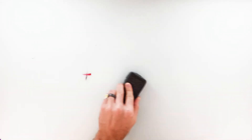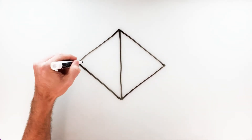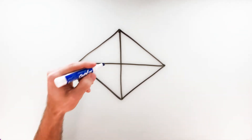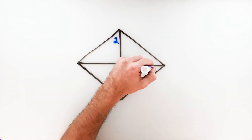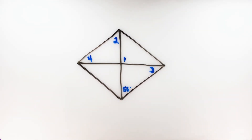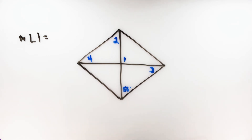Let's do one more rhombus example, this time with both diagonals drawn. We need to find four angles — angles one, two, three, and four — given that one angle is 56 degrees. With a rhombus and both diagonals drawn, it's best to start at the center where the two diagonals intersect, because the second property of rhombuses tells us the diagonals are perpendicular. So those angles at the intersection are always 90 degrees. Angle one is 90 degrees.